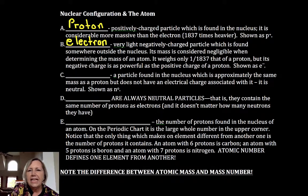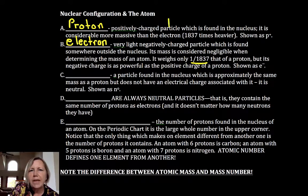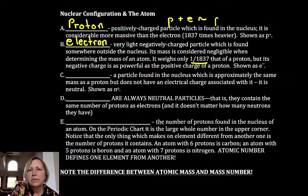The electron weighs about 1/1837th of a proton, so we call it negligible. If we took the mass of a proton plus an electron, it's going to be approximately equal to the mass of a proton because within significant figures that electron addition is so small.